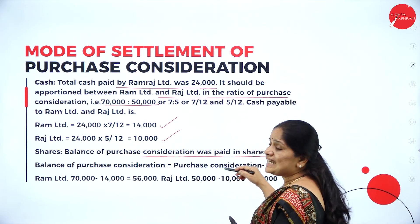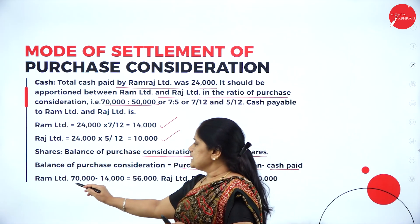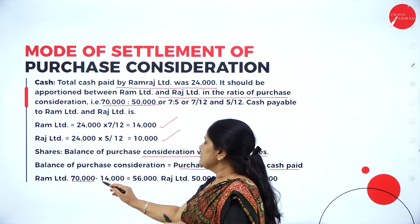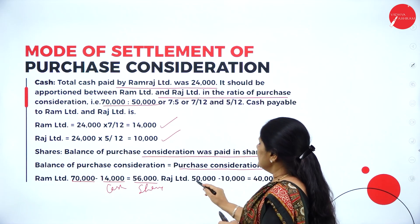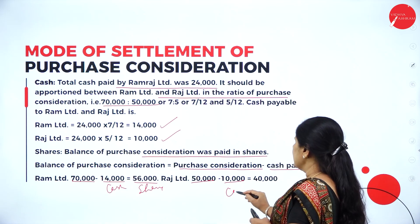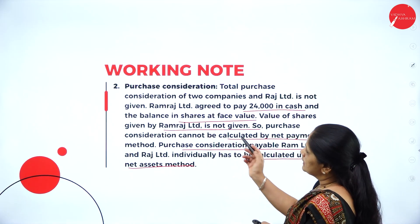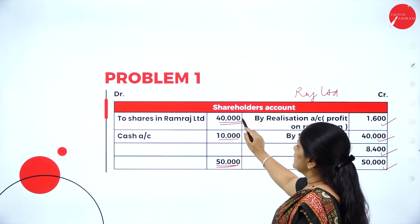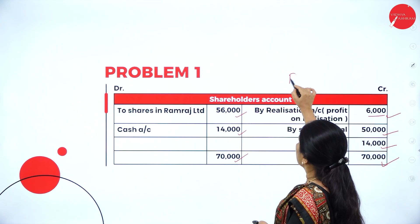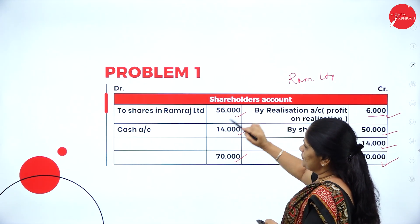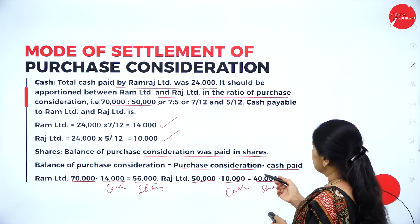The balance of purchase consideration is paid in shares. For Ram Limited, purchase consideration is 70,000 minus cash of 14,000, leaving shares of 56,000. For Raj Limited, purchase consideration is 50,000 minus cash of 10,000, leaving shares of 40,000. As reflected in the shareholders accounts: Ram Limited has shares 56,000 and cash 14,000; Raj Limited has shares 40,000 and cash 10,000. This is how we prepare the ledger accounts in the books of the selling company.